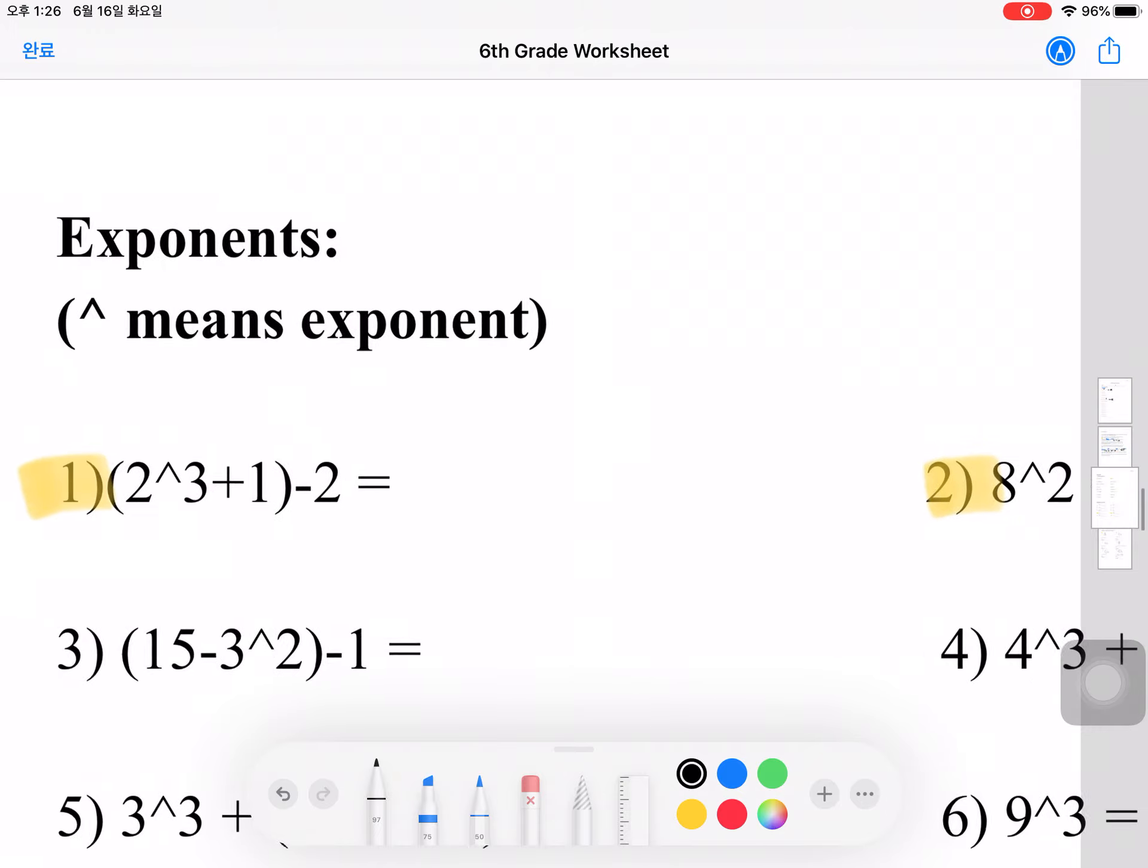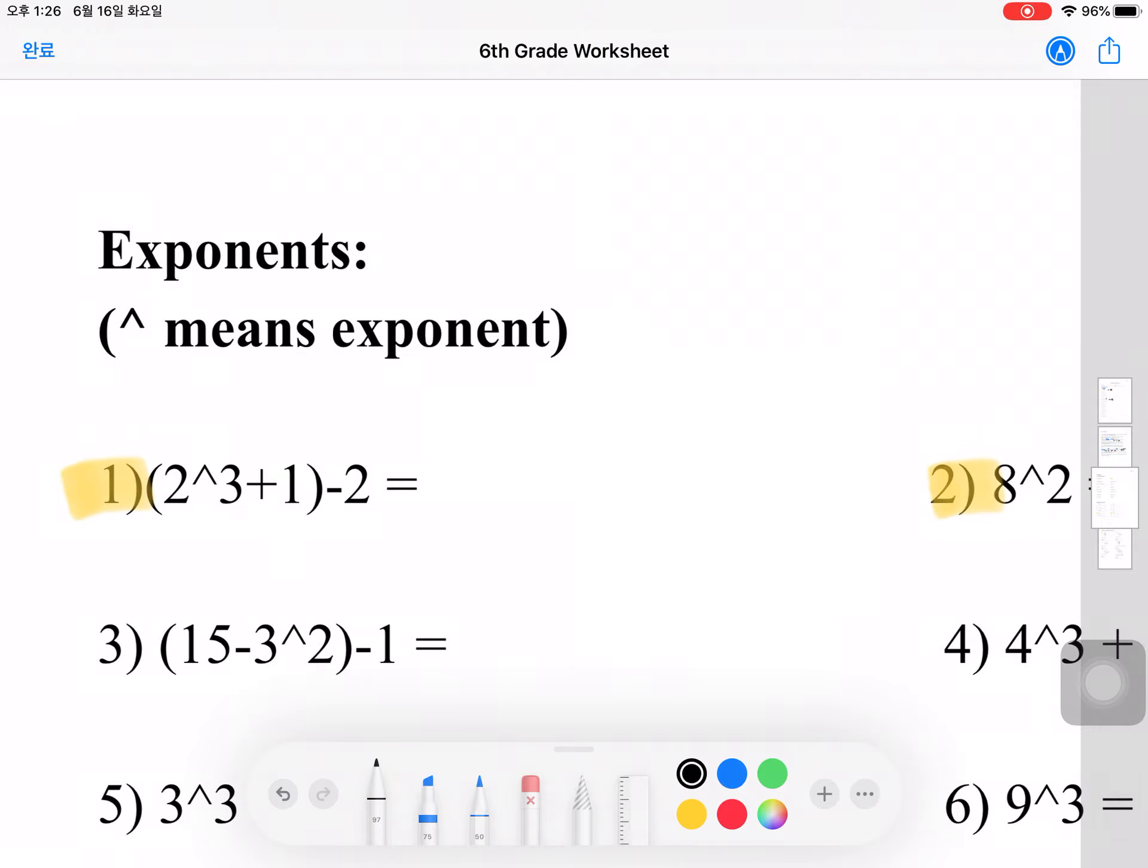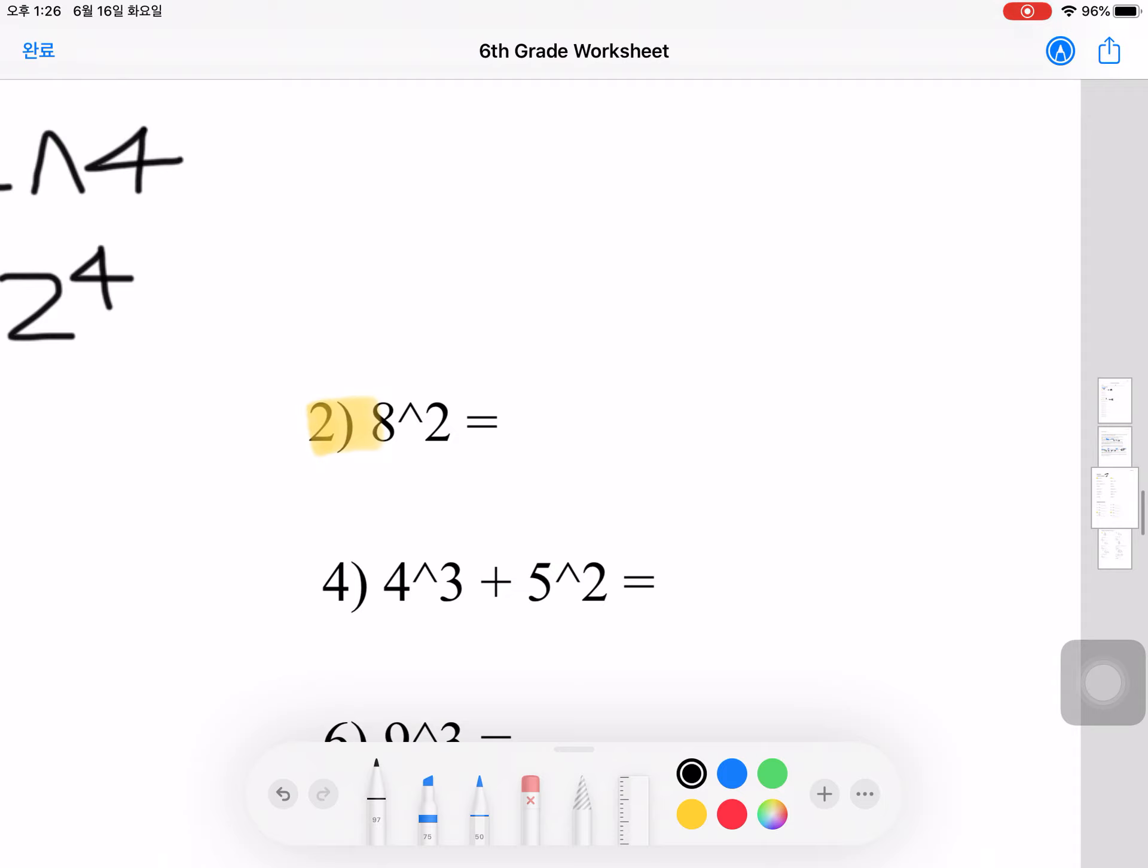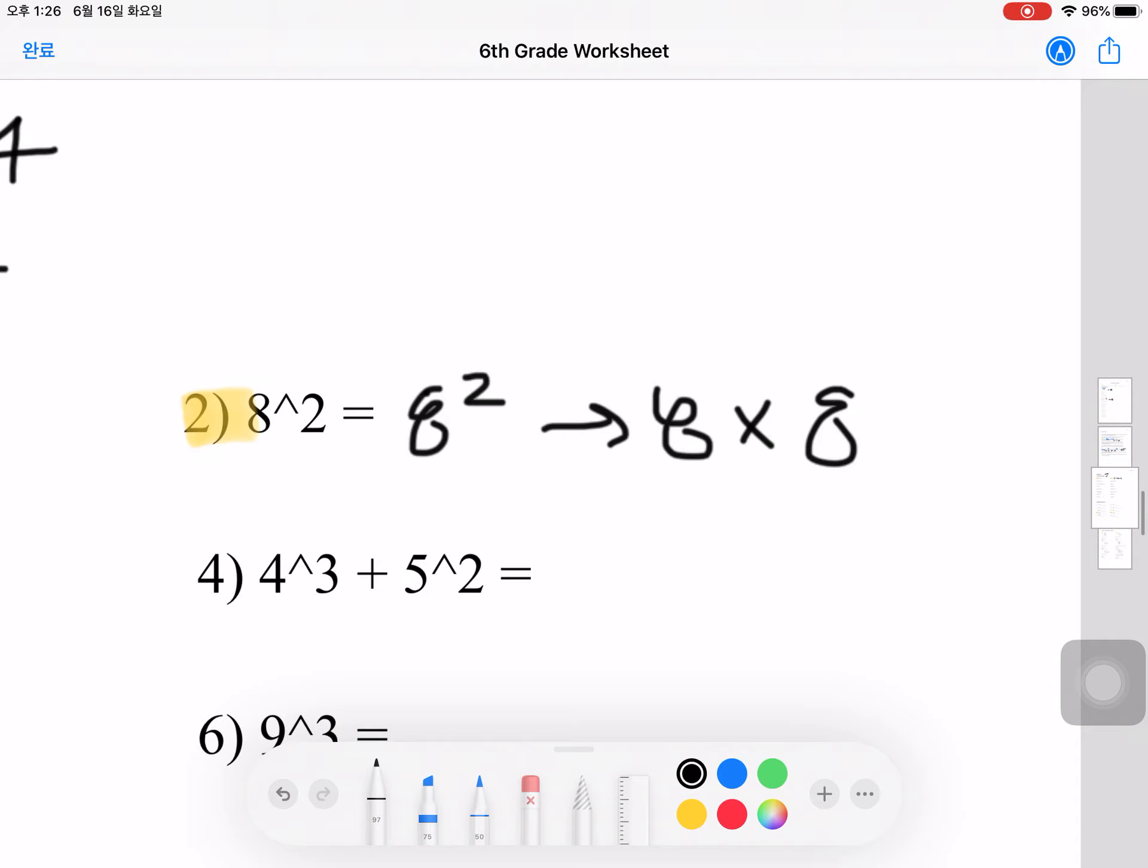Basically what the caret symbol means is to the power of. So for example, if it was 2 caret 4, that means 2 to the power of 4. Keeping that in mind, let's try number 2. 8 to the power of 2, which is just 8 times 8, which comes out to a total of 64. So your answer is 64.